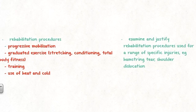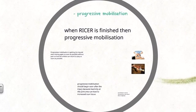For example, it mentions hamstring tear and shoulder dislocation. A hamstring tear or any sort of muscle tear is a good scenario to use — most people are familiar with them. It is a good idea, as I talk through these dash points, that you apply them to a specific injury scenario. So the first dash point is progressive mobilisation.